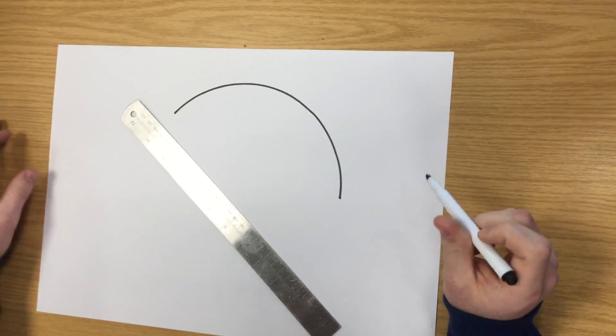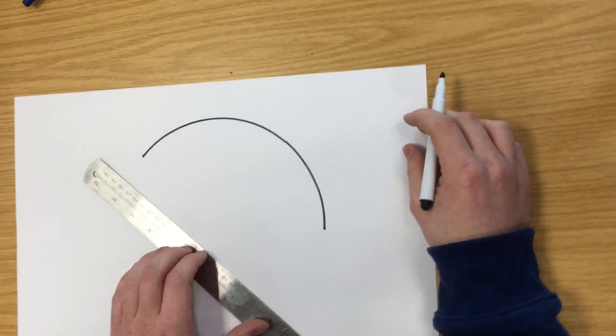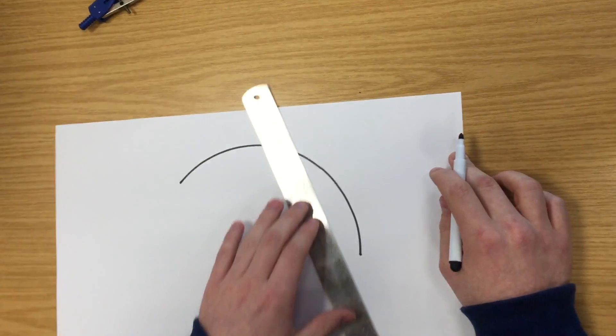What we're trying to do is draw a curve parallel to another curve. We have our first curve here, and what we're going to do is draw two chords.